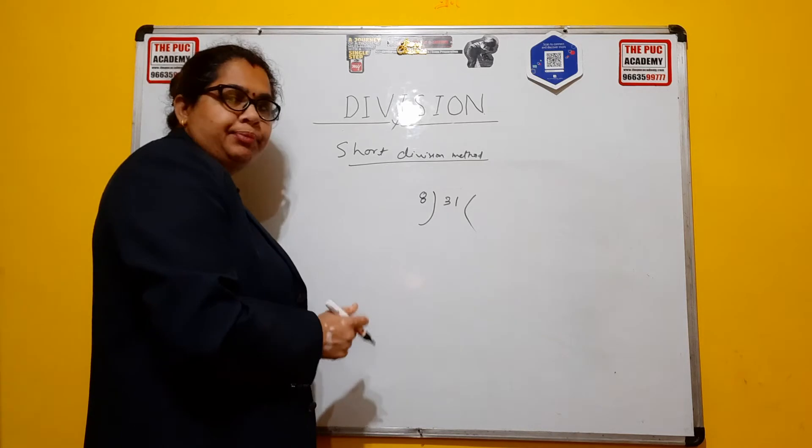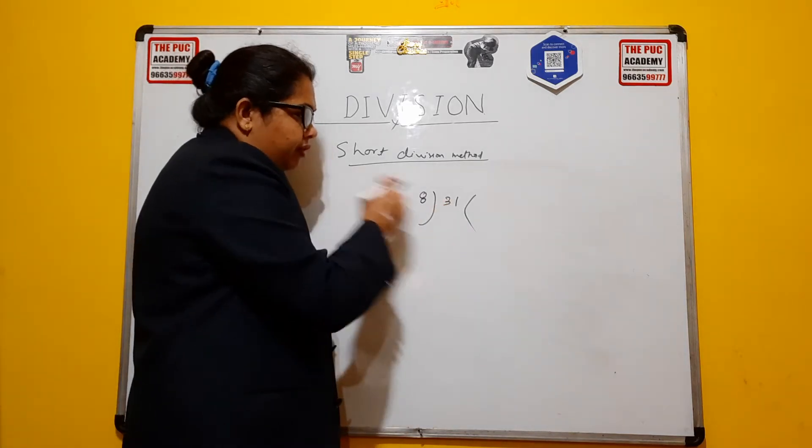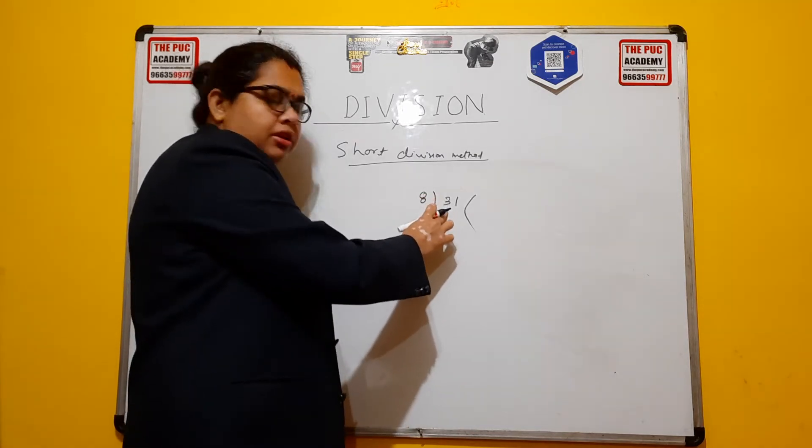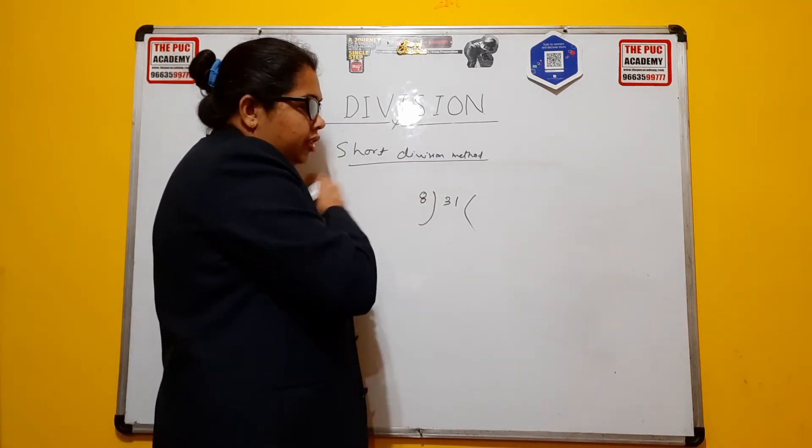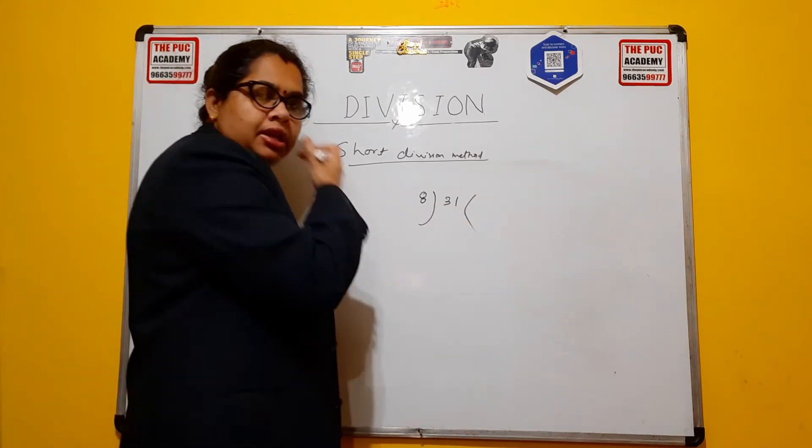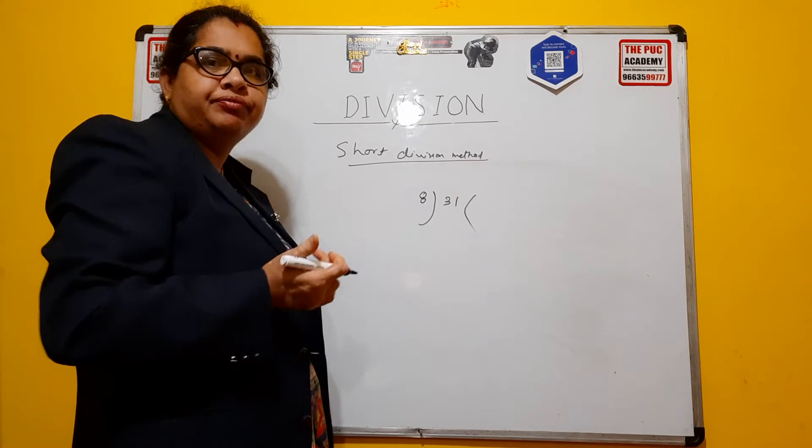The first step is, we will see the number from the left, not from the right. So see here 3. 3 is lesser than 8. So we will consider both the numbers here because 3 cannot be divided by 8.